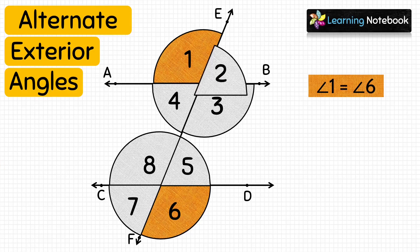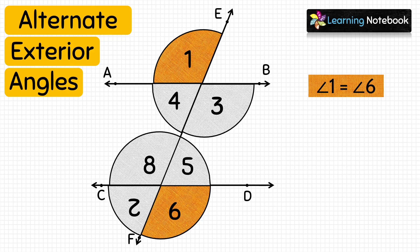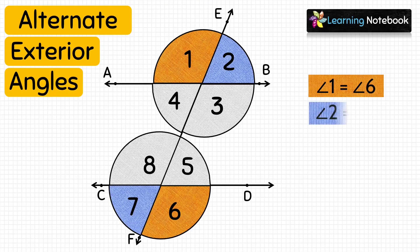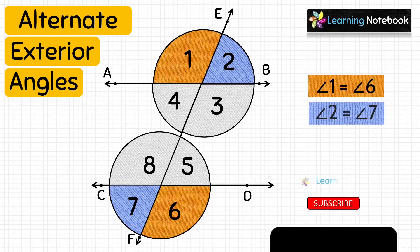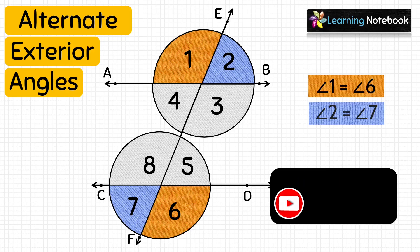Similarly, let's place the cutout of angle 2 on angle 7 — we find that angle 2 completely covers angle 7, so the second pair of alternate exterior angles are also equal. In this way, we have proved that the pairs of alternate exterior angles made by a transversal are equal.